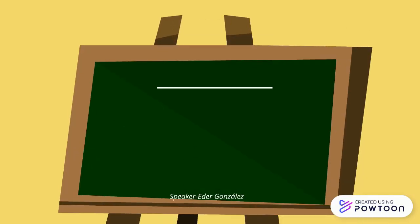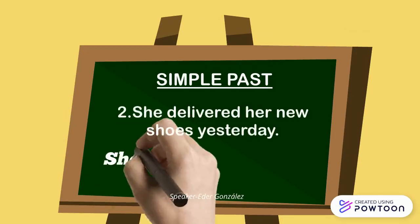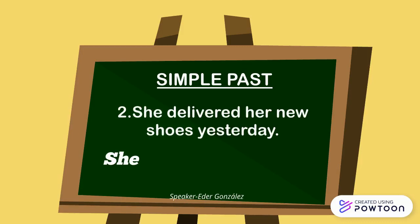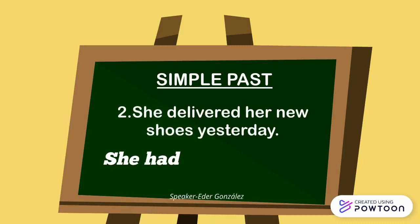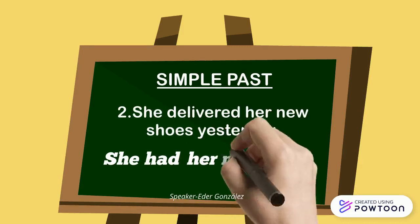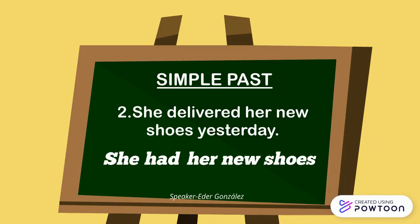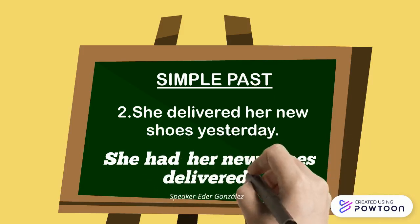Again, we start by placing the subject at the beginning, then the verb 'have' we transform into the past simple, and we place the object of the sentence, which is 'her new shoes', and finally the main verb changes to the past participle.